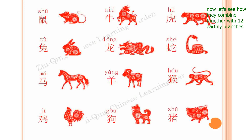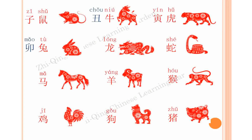Let's see how the animals combine with the 12 earthly branches: zi-shu (rat), chou-niu (ox), yin-hu (tiger), mao-tu (rabbit), chen-long (dragon), si-she (snake), wu-ma (horse), wei-yang (goat), shen-hou (monkey), you-ji (rooster), xu-gou (dog), hai-zhu (pig).